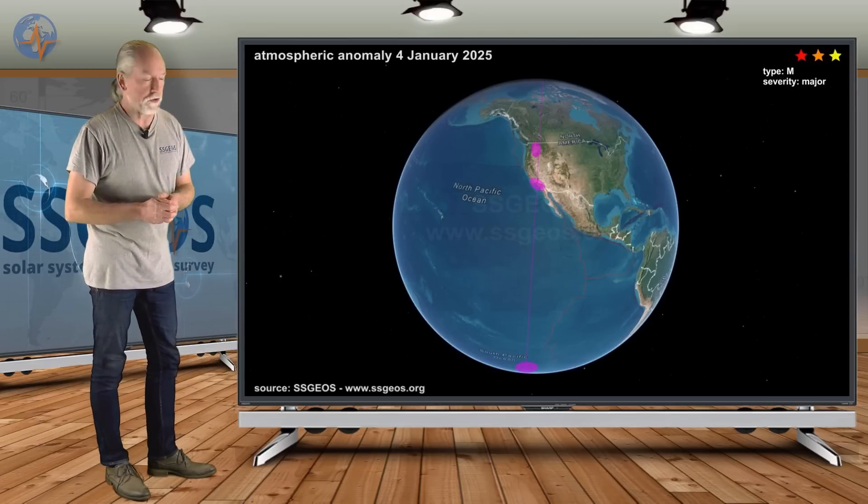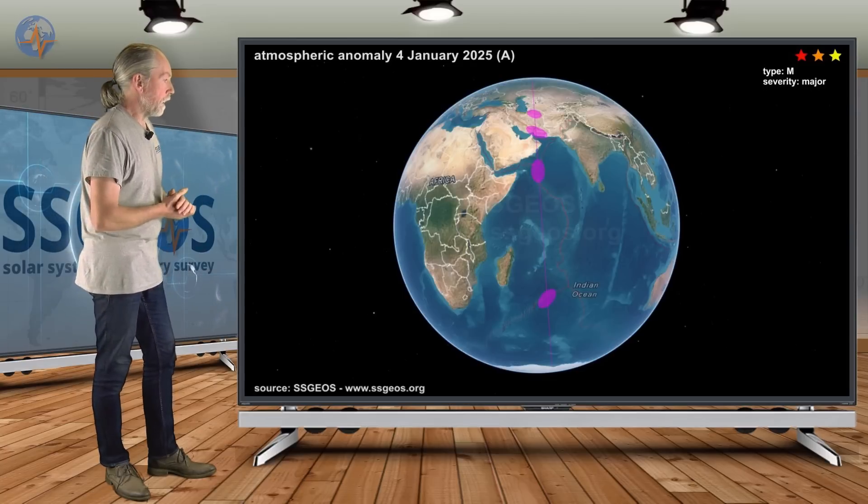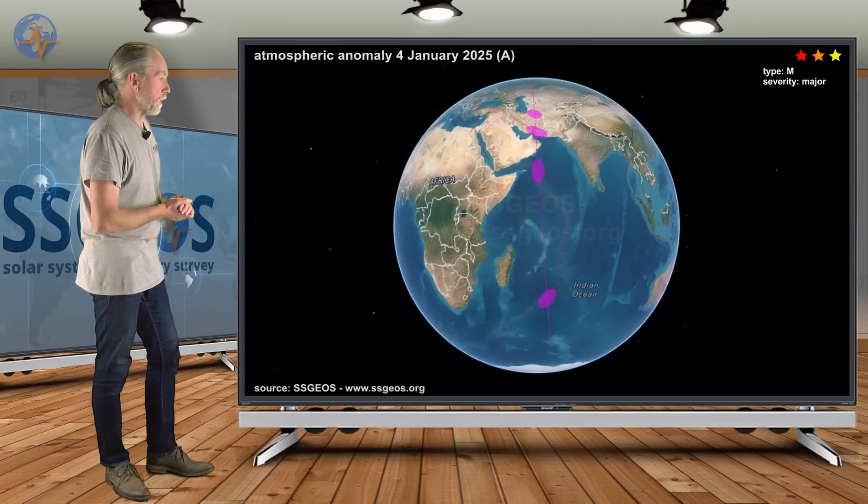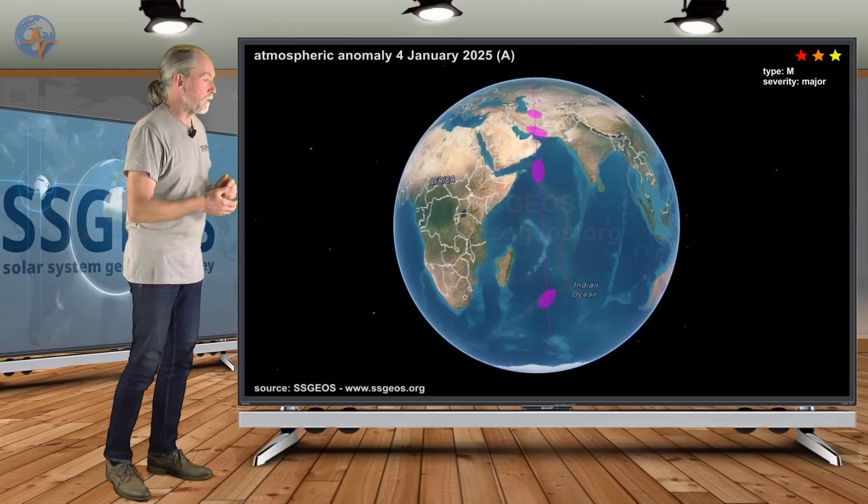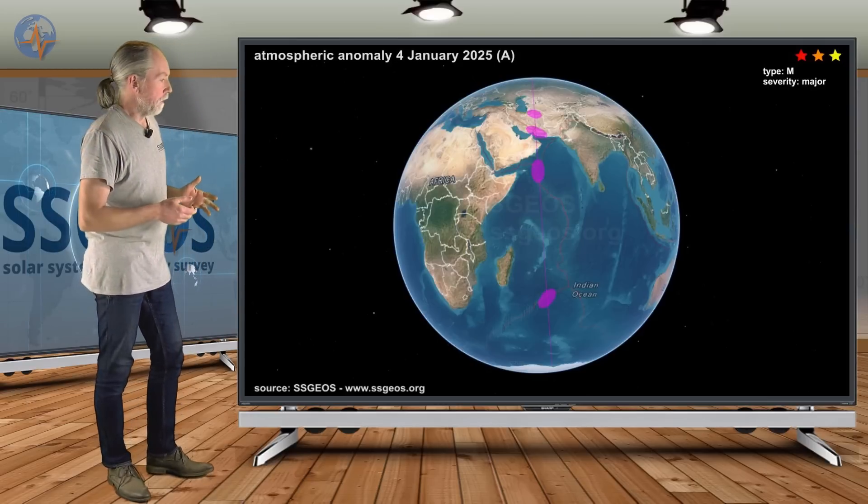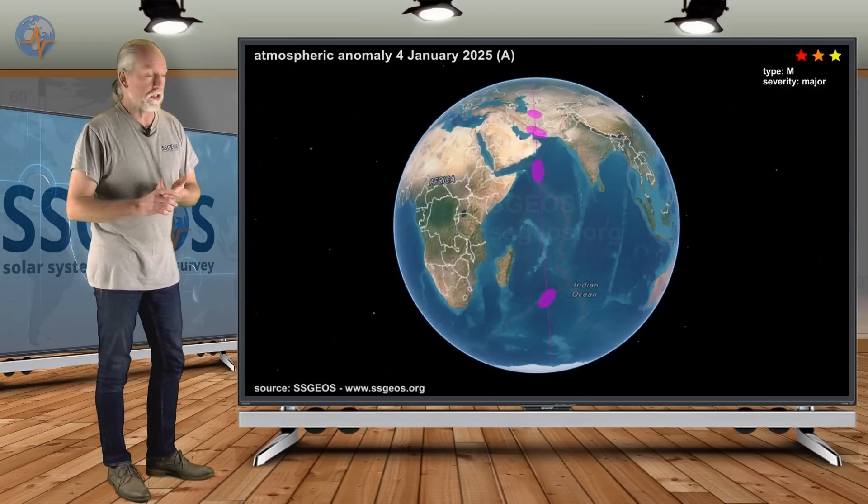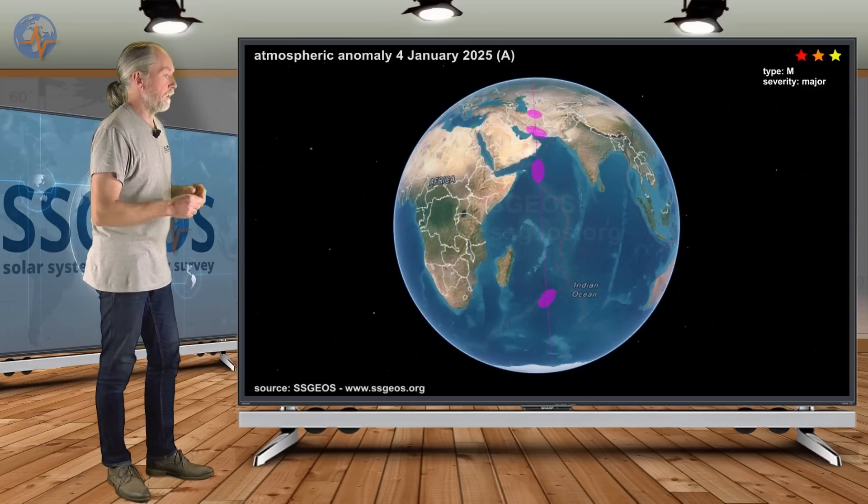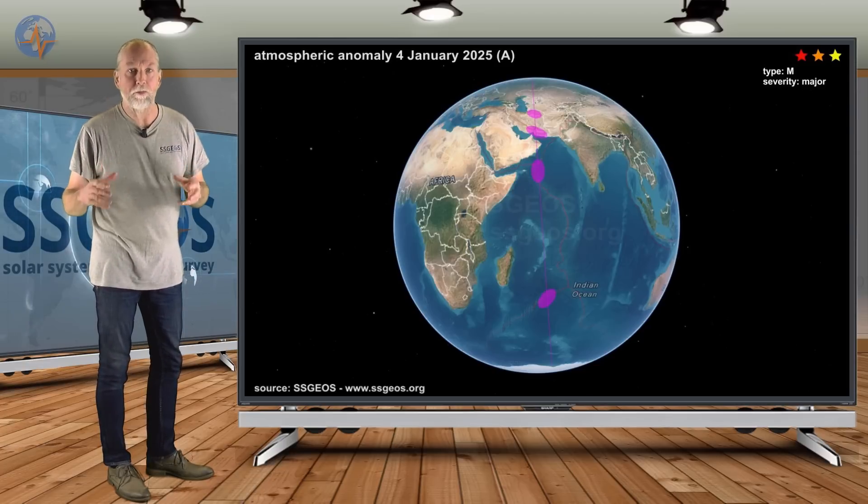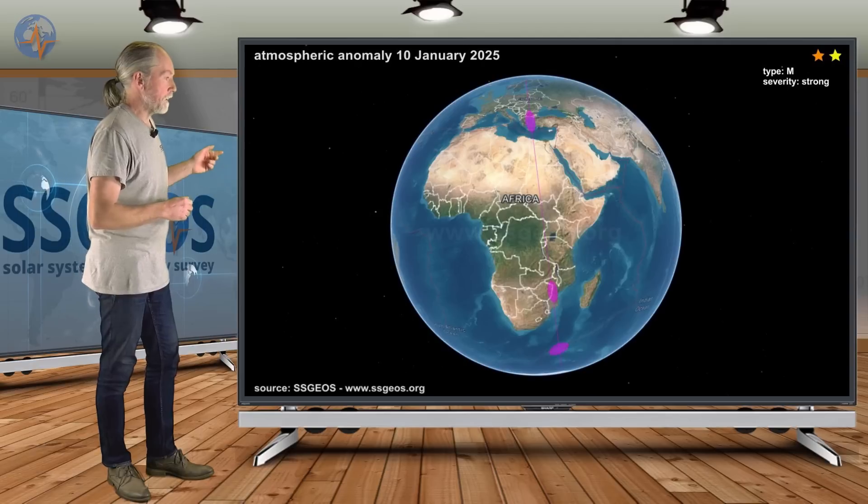And these African anomalies are pretty close. Then on the 4th, also again, the Middle East, but more towards Iran. Iran can have six, maybe even seven magnitude earthquakes from time to time. It doesn't happen very often, but if you are in Iran, be on extra alert as well.